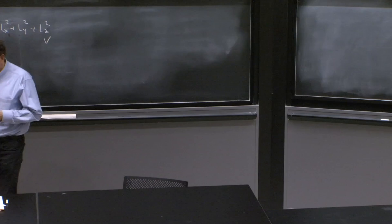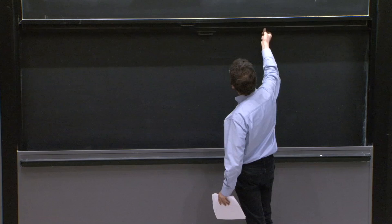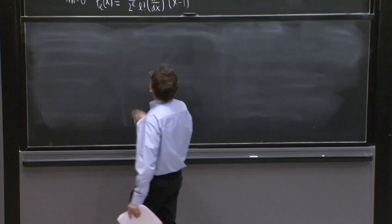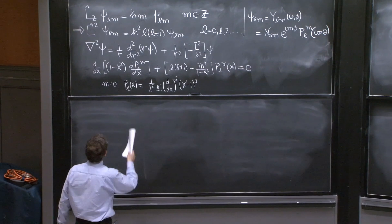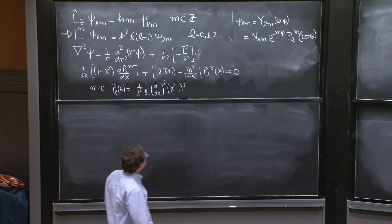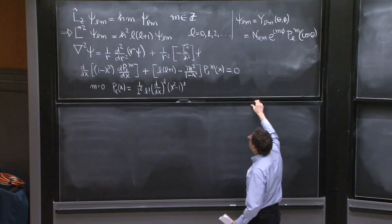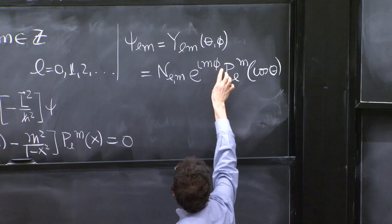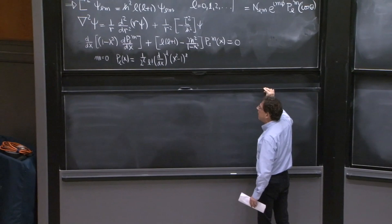And here, there is a simple observation that one can make is that the differential equation for PLM depends on m squared. And we need values, we expect to meet values of m that are positive and negative.